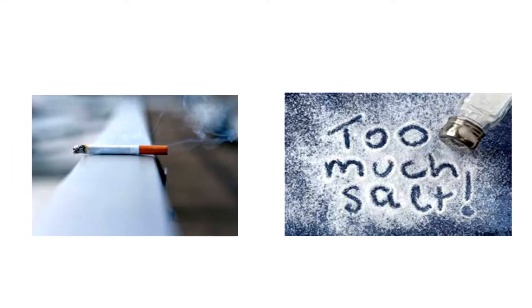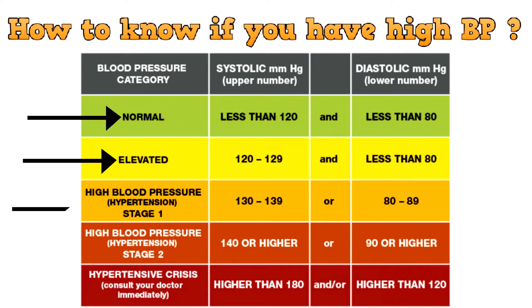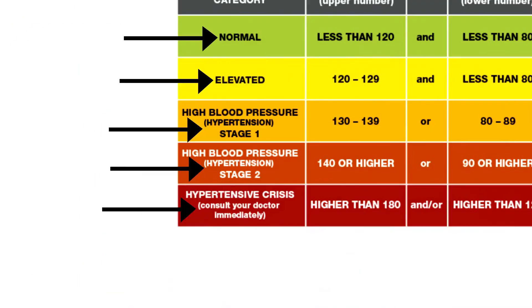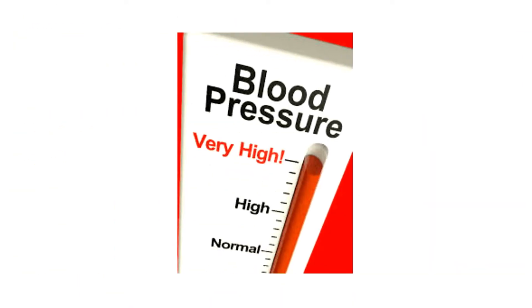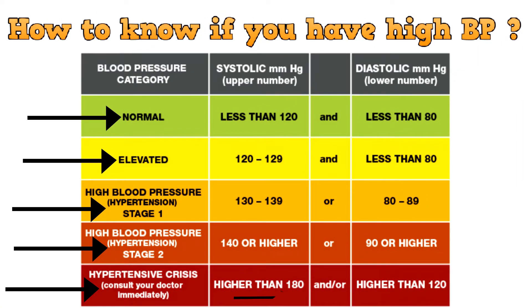Slight elevation can be due to various reasons like too much salt in the diet, smoking, or being obese. Hypertension stage 1 is diagnosed when systolic BP is 130 to 139 and diastolic is 80 to 89. Hypertension stage 2 is diagnosed when systolic BP is 140 or higher and diastolic is 90 or higher. There is a condition known as hypertensive crisis, which is a severe increase in blood pressure — systolic BP can be higher than 180 and diastolic higher than 120.